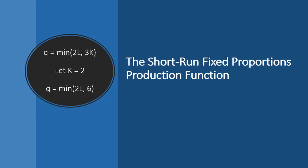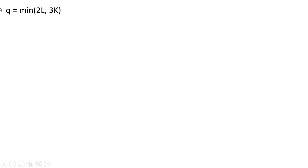This video will look at the short-run fixed proportions production function. We have a fixed proportions production function where Q, quantity of output, is a minimum of 2L or 3K. L is units of labor and K is units of capital.